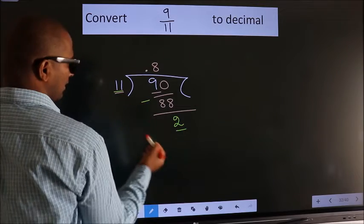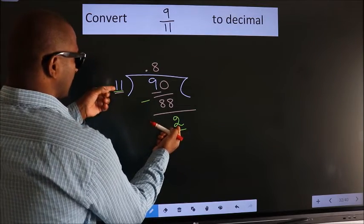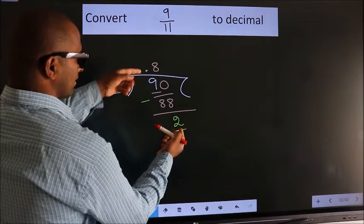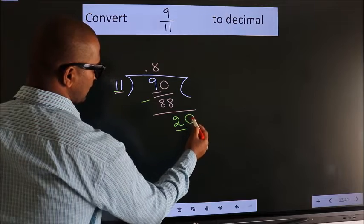Here we have 2, here 11. 2 is smaller than 11, and we already have the decimal, so this time we can directly take 0.